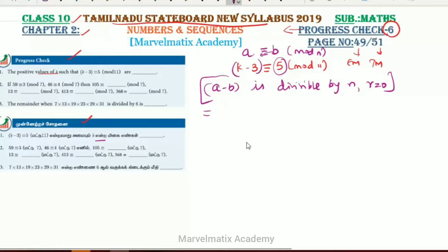The concept of a minus b divisible by n means it equals some integer. So k minus 8 divided by 11 equals n, which implies k minus 8 equals 11n. Therefore, k equals 11n plus 8. This is the equation.